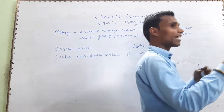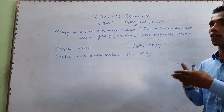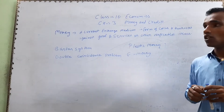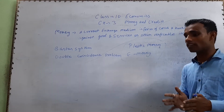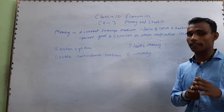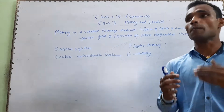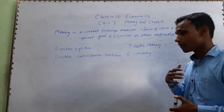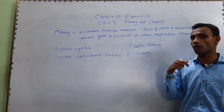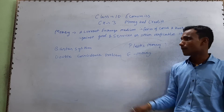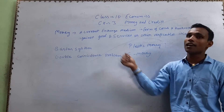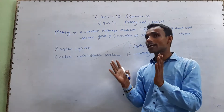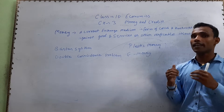The core issue is: to exchange one item for another, you need the other party to also want your item. This is the problem of double coincidence of wants. If you don't need what the other person offers, the exchange will not happen.